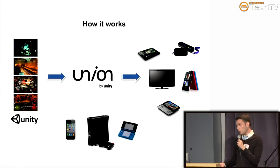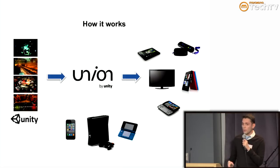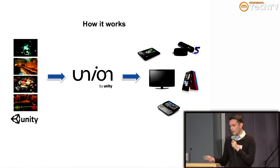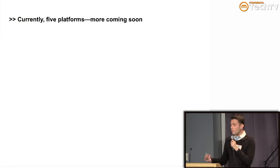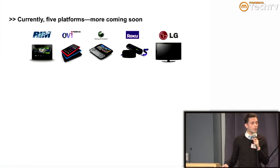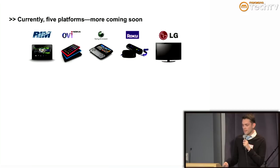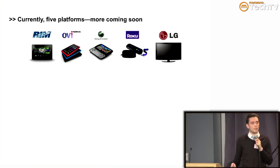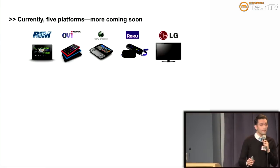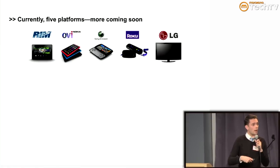We do not, however, work with iOS. We don't publish to any of the consoles, nor do we publish to any of the current handheld systems. More specifically, the platforms that we do work with right now — there are five: RIM's BlackBerry Playbook, Nokia N9 which is a MeeGo-based mobile handset, Sony Ericsson's Xperia Play handset which is Android-based, Roku which is a set-top box designed for streaming video content like Hulu and Netflix and is now supporting games.